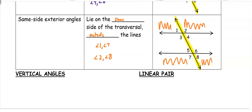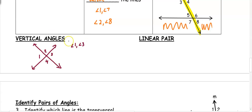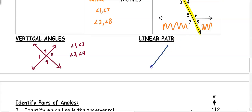From unit one, we also have two angle pair types that do not need transversals. Vertical angles are formed by intersecting lines and are non-adjacent angles. If we label angles 1, 2, 3, and 4, then angles 1 and 3 are vertical, and angles 2 and 4 are vertical. Linear pairs are angles that form straight lines. With two intersecting lines, angles 1 and 2 are a linear pair, and angles 3 and 4 are a linear pair — they always form a straight line.